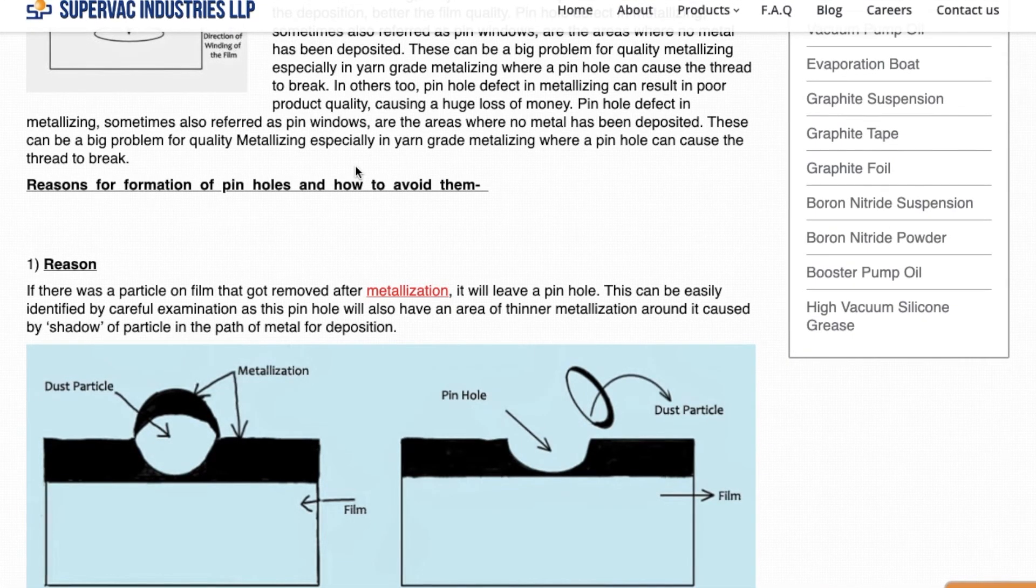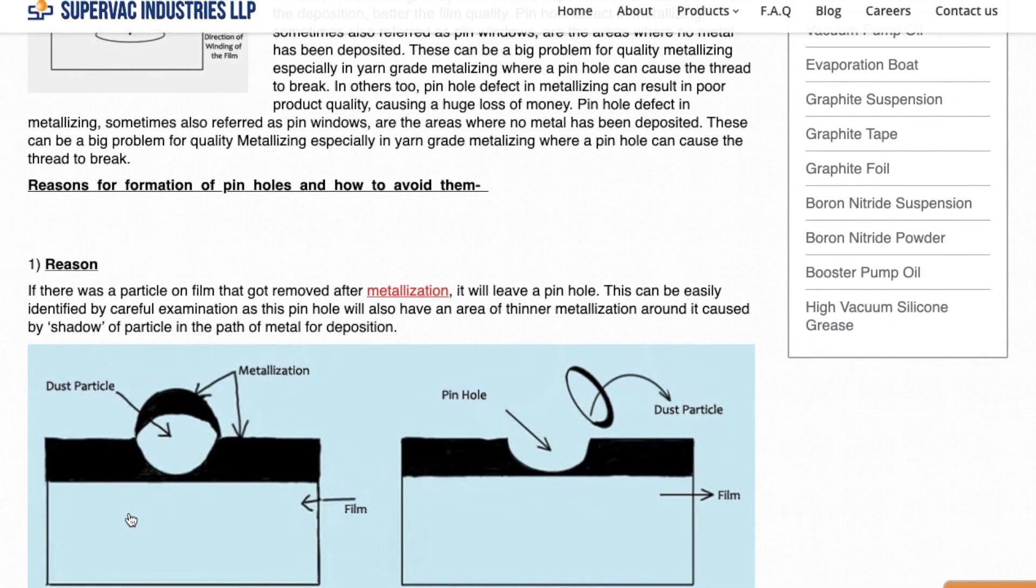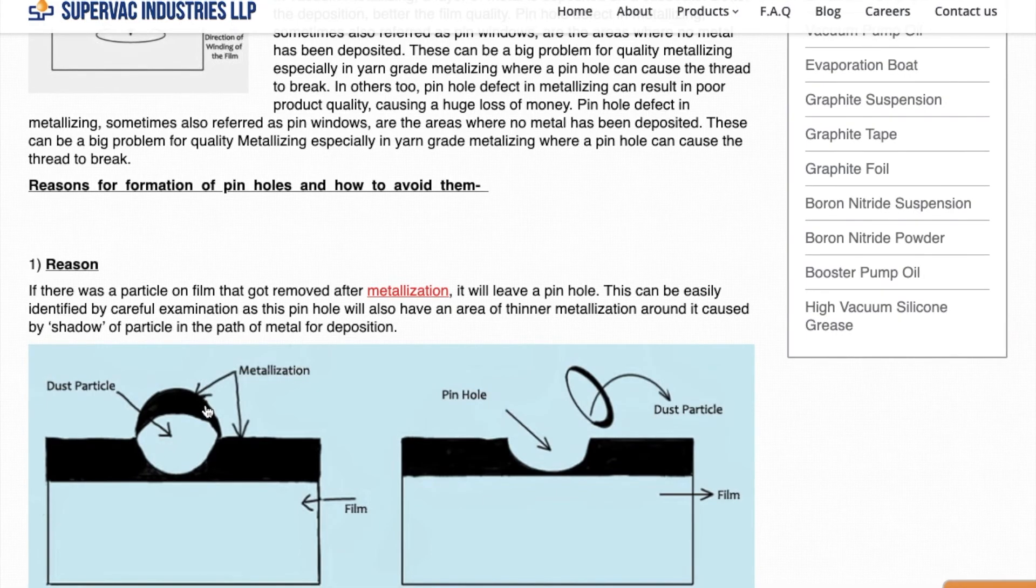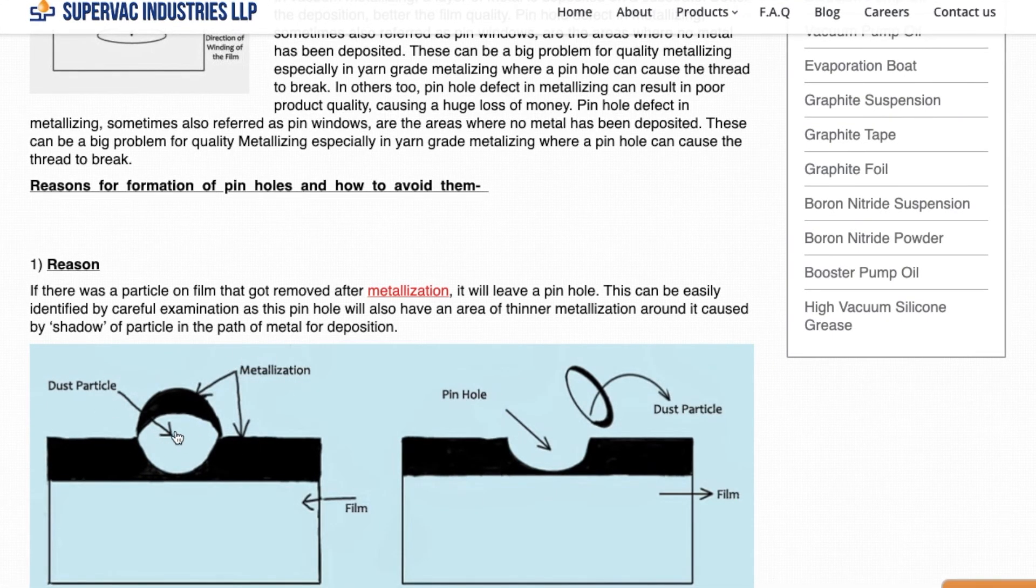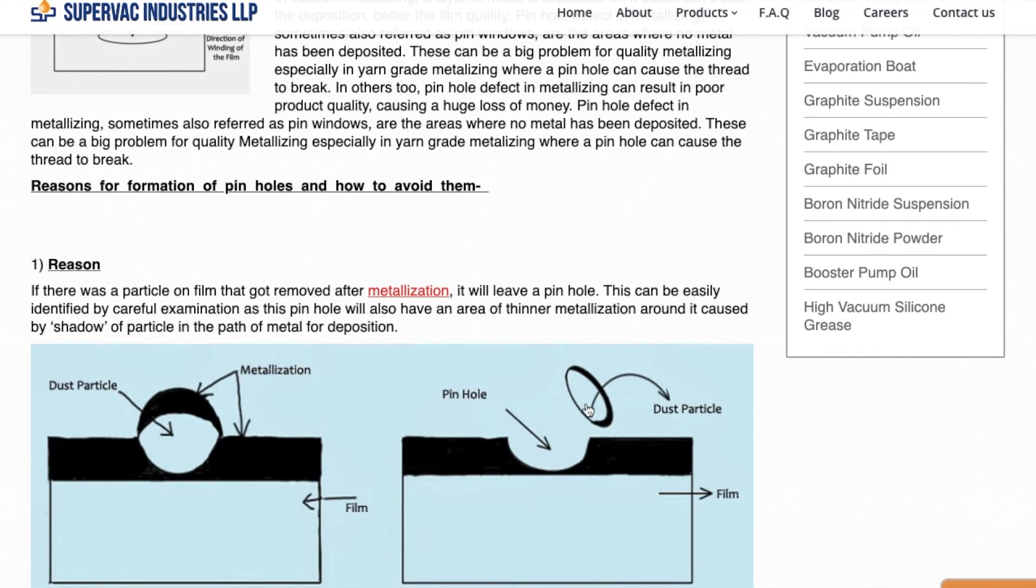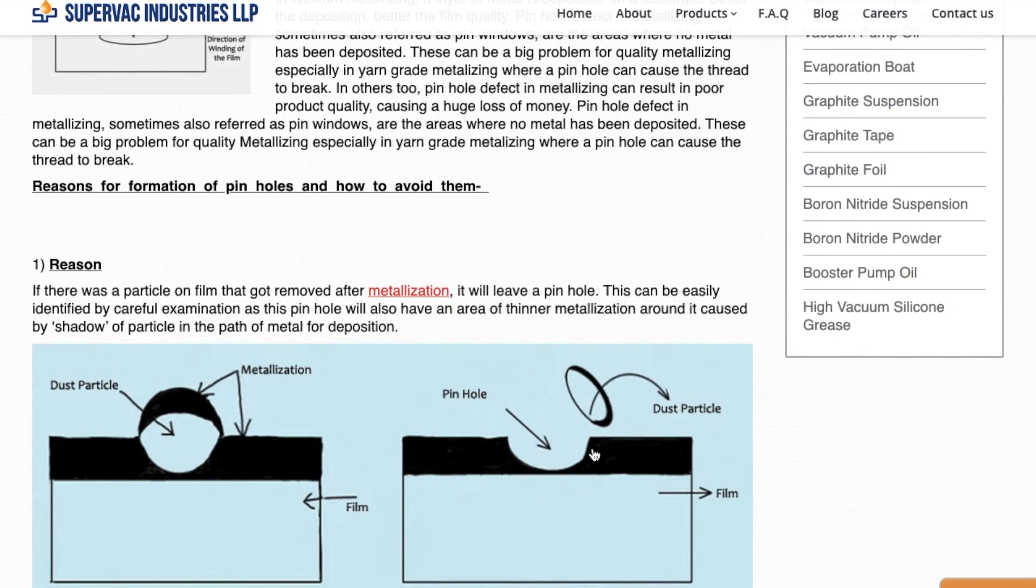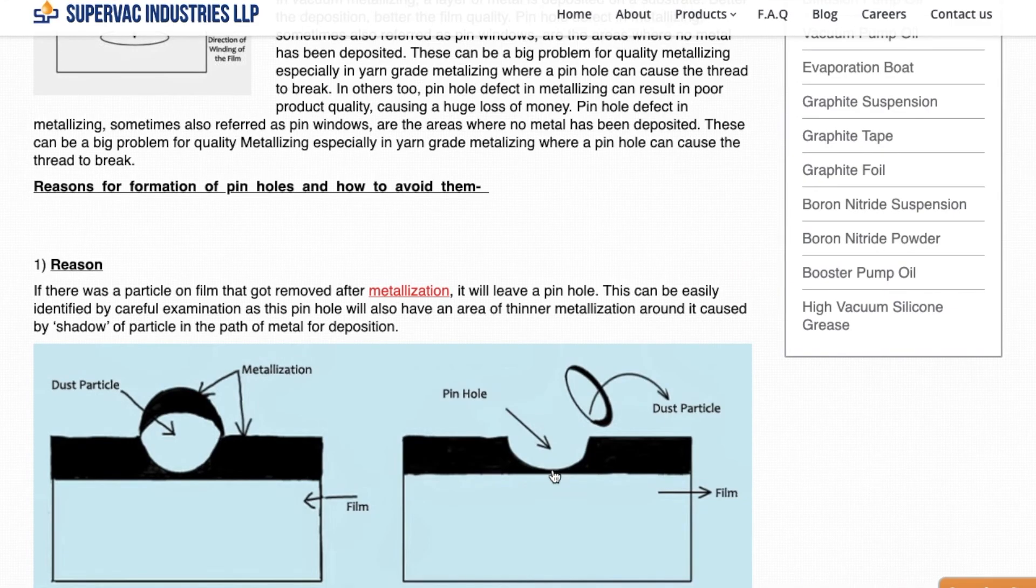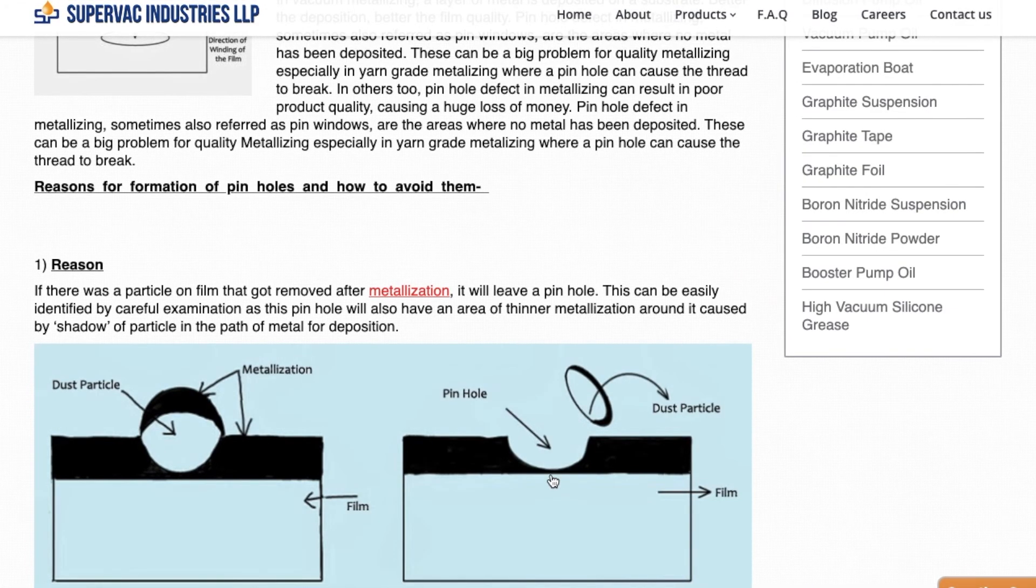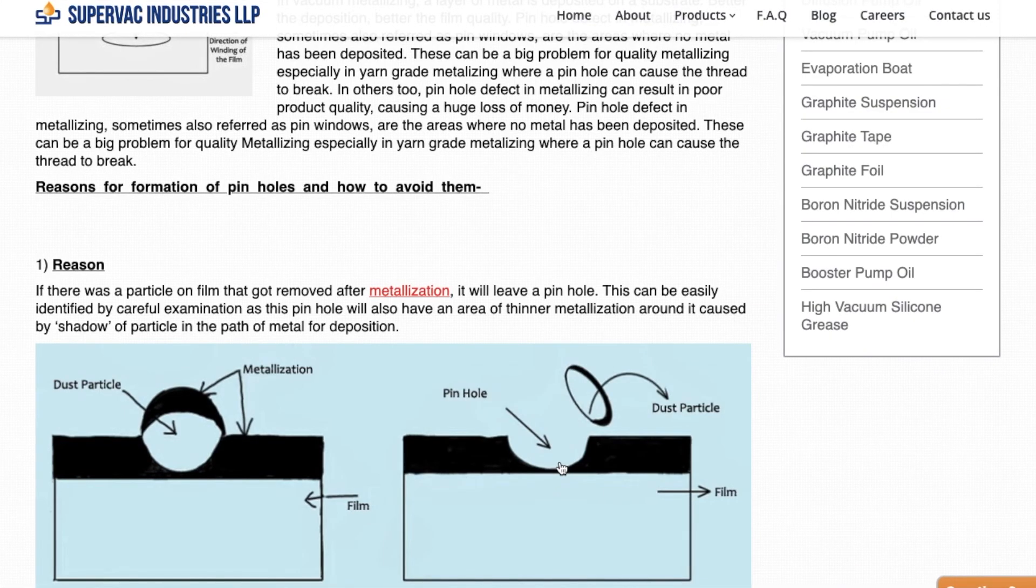First and foremost is dust particles. As you can see over here on the substrate, there is a dust particle sitting. So when metallizing takes place, the metal gets deposited on top of the dust particle. This dust particle sometime later will get dislodged and will leave a pinhole of this shape. So now when we examine the film carefully, we see some kind of a crater and very thin metalized area which was in the shadow of the dust particle. This gives away that this has been caused by dust.